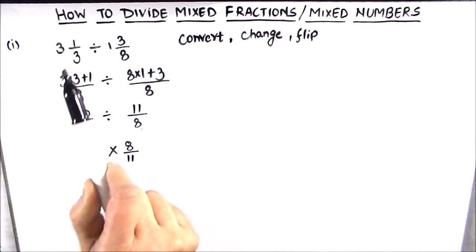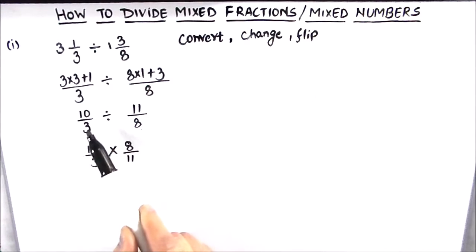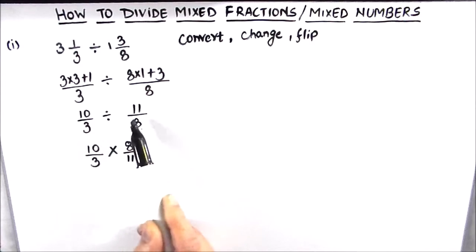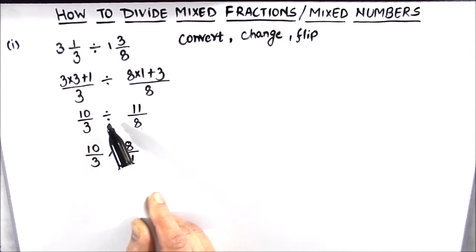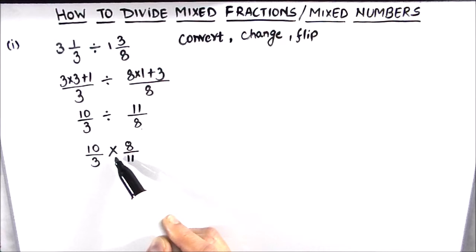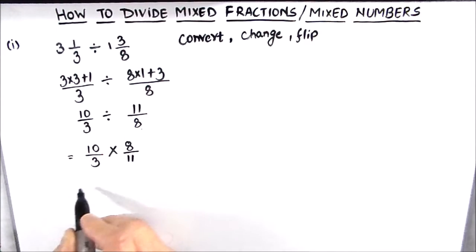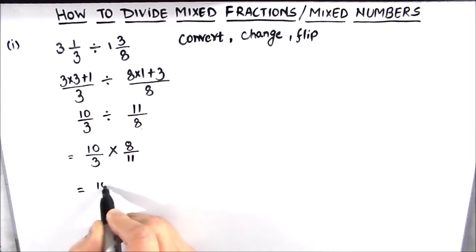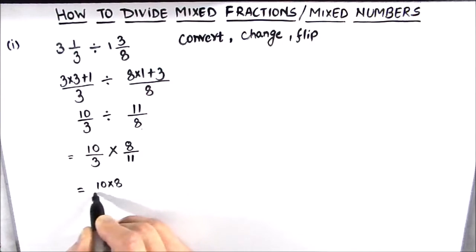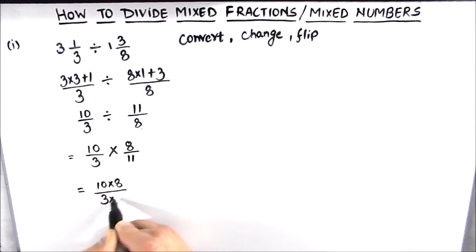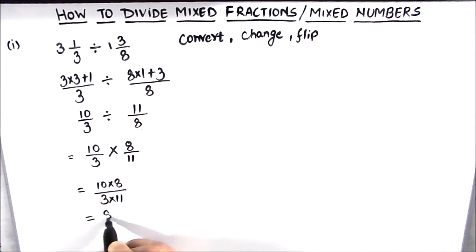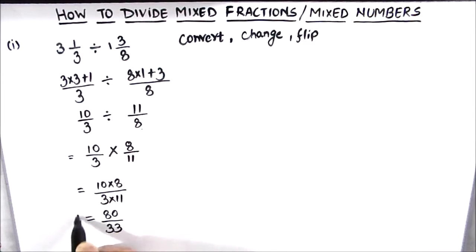We changed the sign between the two fractions — the division sign becomes a multiplication sign — and then we flip the other fraction. So our expression is now 10 times 8 in the numerator and 3 times 11 in the denominator. That gives us 80 over 33, which is our final answer.